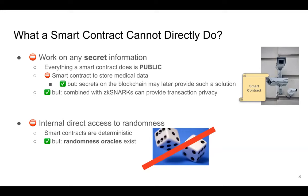The last thing smart contracts cannot directly do is access randomness. Everything is public and deterministic — the opposite of randomness. If you know the complete state of the world, nothing is random. In the blockchain nothing is random at some level, but that doesn't mean you can't access randomness at all — it means you need something outside the smart contract, called a randomness oracle. On Algorand specifically, there are things called VRFs that provide some form of randomness, but this is sufficient for consensus, not necessarily for applications like lotteries.